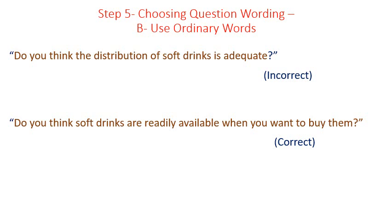Step number five, final part — choosing question wording. B: use ordinary words. Example: 'Do you think the distribution of soft drinks is adequate?' is incorrect wording. The correct wording is: 'Do you think soft drinks are readily available when you want to buy them?' By now we have finished our lectures. Wish you all good luck.